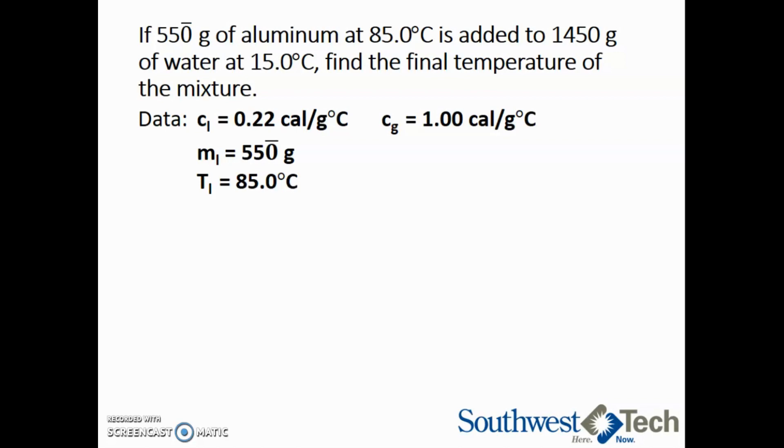c_G, or the specific heat of water, is 1 calorie per gram degree Celsius. The mass of the water, or m_G, is 1450 grams. The initial temperature of the water is 15 degrees Celsius.